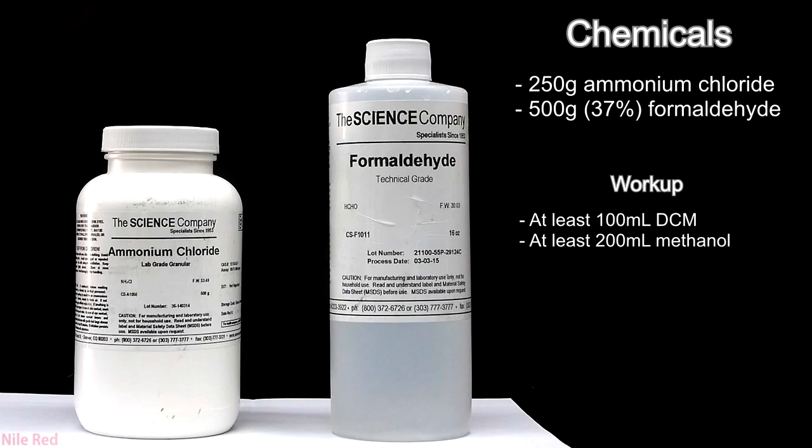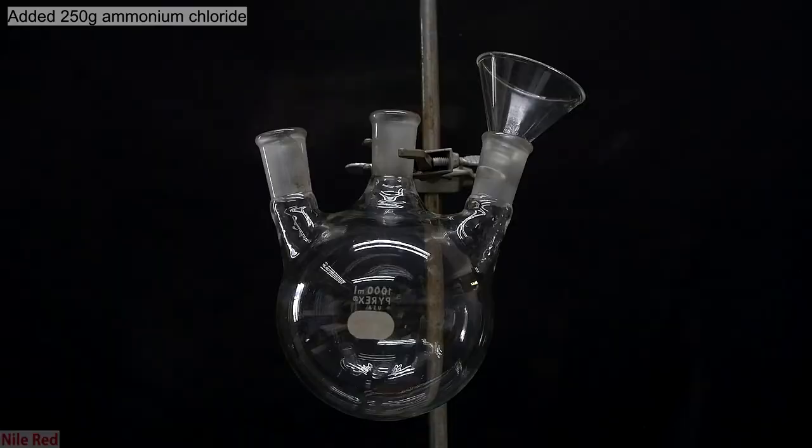For this preparation, we really only need two main chemicals, and that's ammonium chloride and formaldehyde. In total, I used about 250 grams of ammonium chloride and about 500 grams of 37% formaldehyde. One thing to note is that although this reaction does use quite a bit of ammonium chloride, a lot of it is recovered in the end. I followed the Chemplayer methylamine hydrochloride video, and I used it as a guide, and I'm going to provide a link to it in the description.